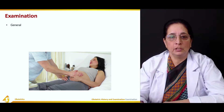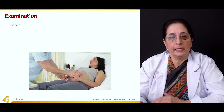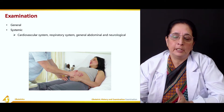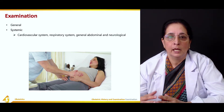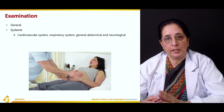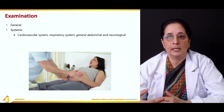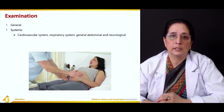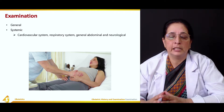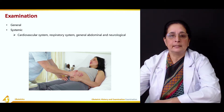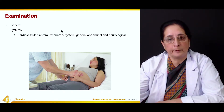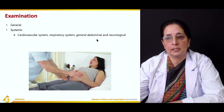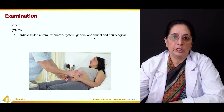Examination of a pregnant woman begins with general examination. On each antenatal visit, blood pressure is tested and the patient is checked for anemia; height and weight are also recorded. In systemic examination, each system is examined separately — cardiovascular system, respiratory system, and general abdominal examination.